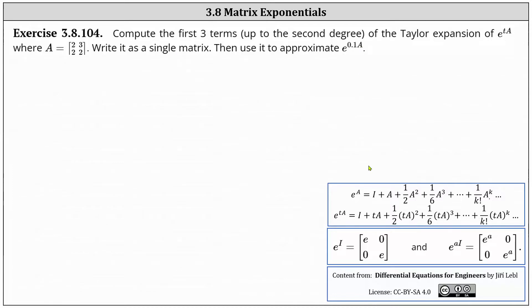Using the definition of the matrix exponential e to the power of A, e to the power of TA is equal to I plus TA plus 1/2 times the square of TA, and so on. This is an infinite series. However, we're told to only use the first three terms or up to the second degree, and therefore we stop here.